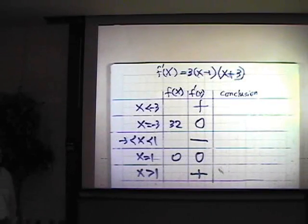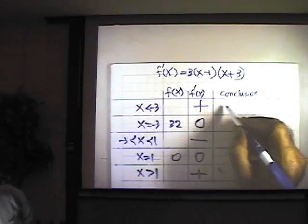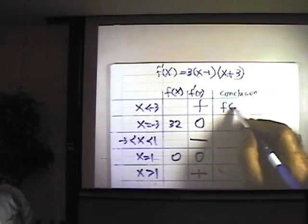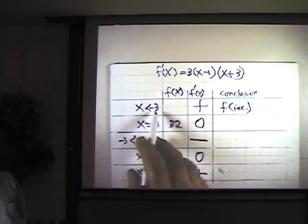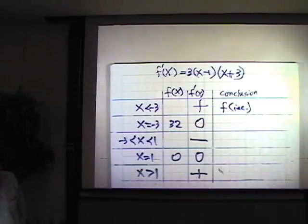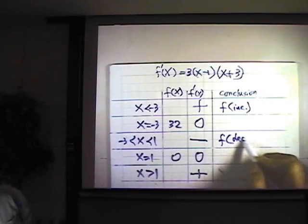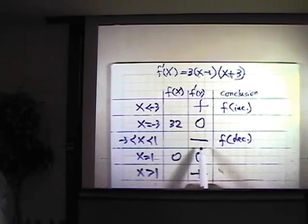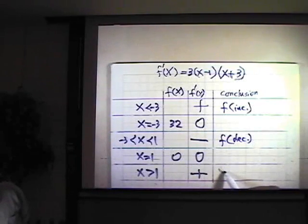Now I can begin to make some conclusions from this information. If f prime is positive, function is increasing on this interval. In the interval from negative infinity to negative 3, function is increasing. On this interval from negative 3 to 1, function is decreasing. Since f prime is negative, function is decreasing. Here f prime is positive, function is increasing.